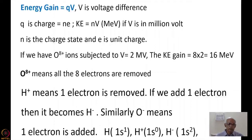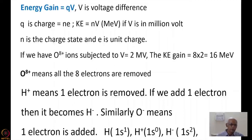The energy gain is Q times V, where V is the voltage difference. Q is the charge which is equal to N times E, where N is the charge state. The kinetic energy will be N times V — V is the voltage — so this kinetic energy will be in MeV if V is in million volts, N is the charge state, and E is the unit charge.